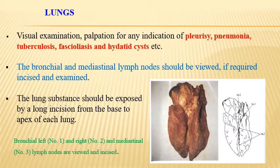Inspection of visceral organs — lungs: visual examination and palpation for any indication of pleurisy, pneumonia, tuberculosis, fasciolosis, and hydatid cysts. We first observe the overall shape and size of the organ, then by palpation understand the consistency and any changes. The bronchial and mediastinal lymph nodes should be viewed first; if there is doubt, then only we should incise and examine further. The lung substance should be exposed by a long incision from the base to apex of each lung when doubt exists. Lymph nodes one and two shown are the left and right bronchial lymph nodes, and number three is the mediastinal lymph node.